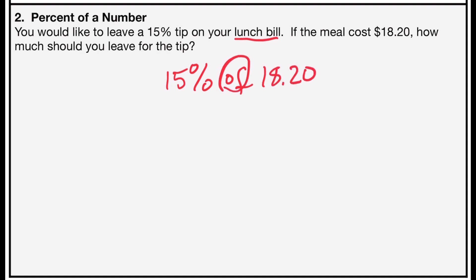Of indicates multiplication, so I'm going to multiply 15% in its decimal form, .15, times the bill for the meal, which is $18.20. If I type that into a calculator, I find out the tip that I should leave is $2.73.